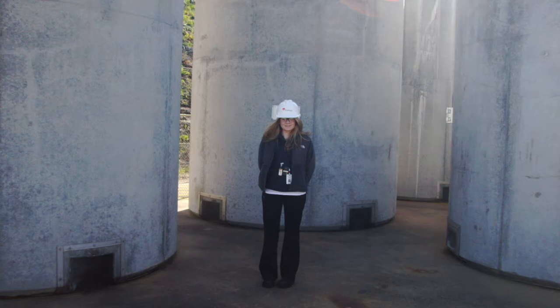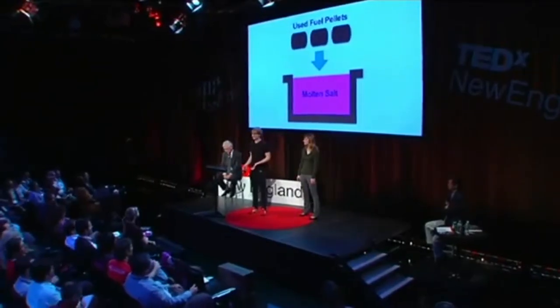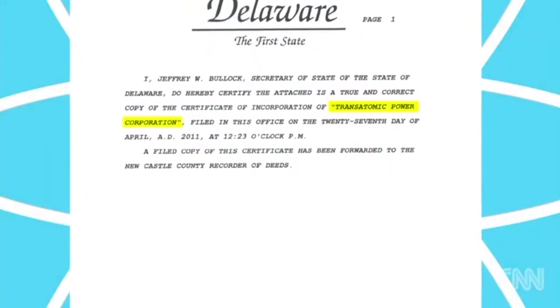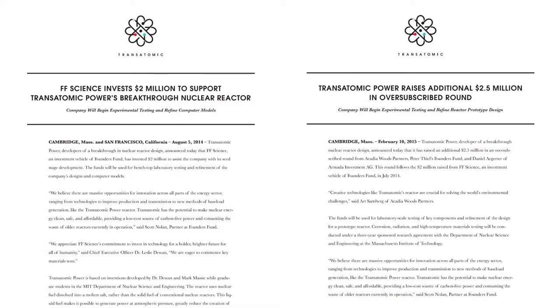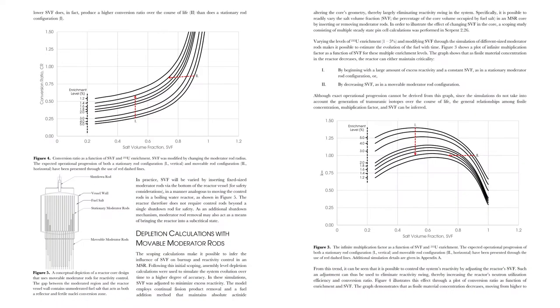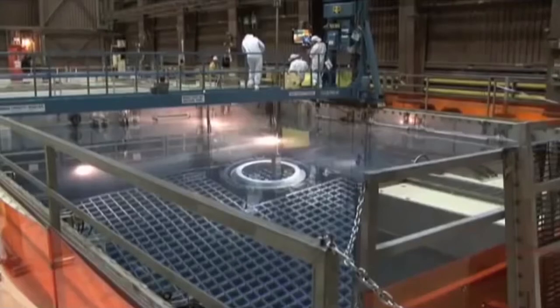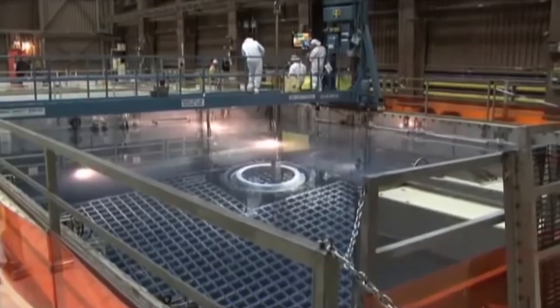The entrepreneur in me says: let's go grab those fuel rods and make money off of them. I know that I can save lives and better society by using those isotopes. The promise of turning nuclear waste into energy with liquid fuel has gotten Dr. Leslie Dewan on CNN and allowed Transatomic Power to raise millions of dollars for lab experiments and computer simulations of their molten salt reactor. There's enough energy trapped inside those spent fuel rods to power the entire planet for decades.